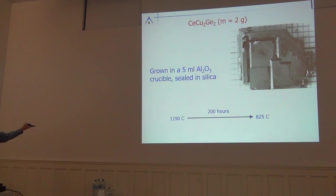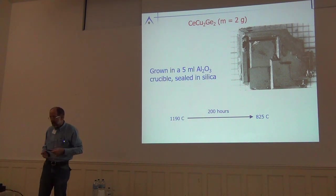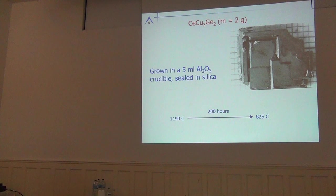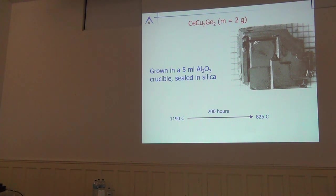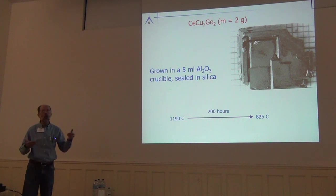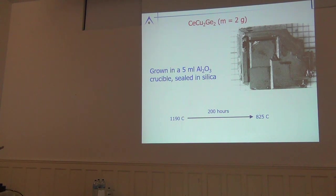Heating to 1190°C and cooling over 200 hours gives large, crucible-limited crystals. I should point out: 200 or 120-hour cooling times are for optimized growths where you're trying to get larger crystals. The nice thing about solution growth is that exploratory growths can be done overnight, in 24 or 36 hours, letting you cover a lot of phase space quickly. Once you find what you want, you do the slower cooldown to get large crystals.